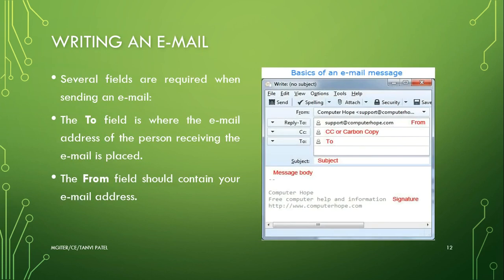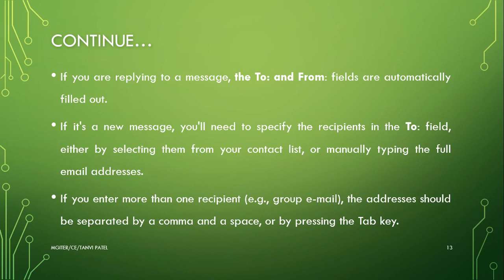When writing an email, several fields are required. The 'To' field is where the email address of the person receiving the email is placed. The 'From' field should contain your email address. If you are replying to a message, the To and From fields are automatically filled out. If typing a new message, you specify the recipient in the To field by selecting from your contact list or manually typing their address. If entering more than one recipient for a group email, addresses should be separated by a comma.